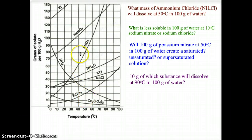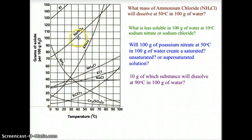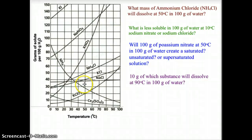There are two types of curves. Growth curves have an upward trend and always represent a solid being dissolved. The downward trend, or decay curves, always represent gases being dissolved in solution.